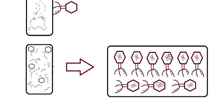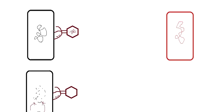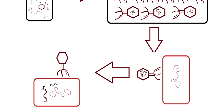This virus particle will then go and infect the red recipient bacteria. The virus injects all of its genetic material into the recipient cell — both the viral genetic material and the bacterial genetic material fragment from the previously infected bacterium.